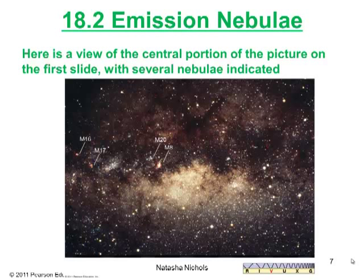Emission nebulae. Here is a view of the central portion of the Milky Way, and there are several nebulae indicated: M16, M17, M20, and M8. This is a wide-angle photograph of a great part of space in the direction of the center of our galaxy. If you look carefully, you see regions of brightness, which correspond to vast fields of stars, as well as regions of darkness where interstellar matter obscures the light from more distant stars. The field of view is roughly 30 degrees across. These four nebulae identified with the letter M are going to be discussed later in the lecture.